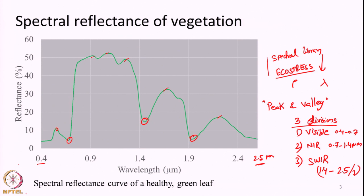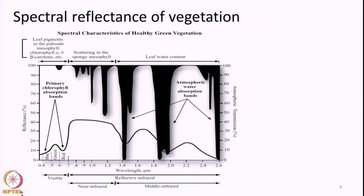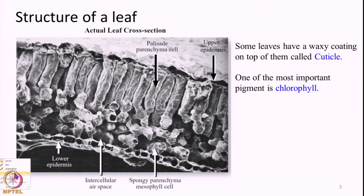Before doing that, it will be beneficial to understand some information about the structure of a leaf. If you look at the structure of a single leaf — this is an electron microscope image — it shows different portions. A leaf has a top portion we call the epidermis, similar to how our skin has a top layer. Some varieties of leaves also have a waxy coating on top called the cuticle, which prevents the leaf from over-draining of water. This coating is thick in desert plants and shrubs, and thin in plants in heavy rainfall regions.